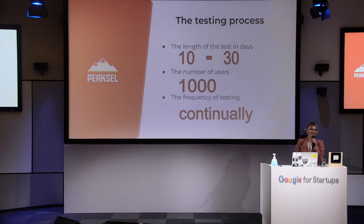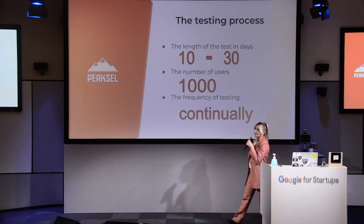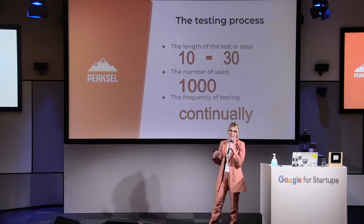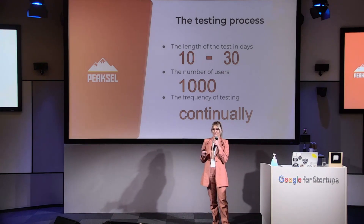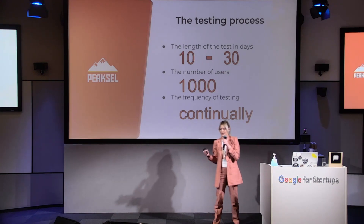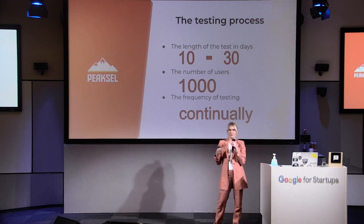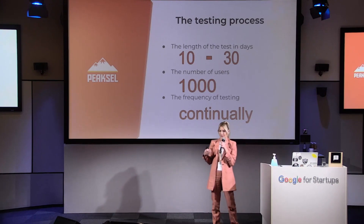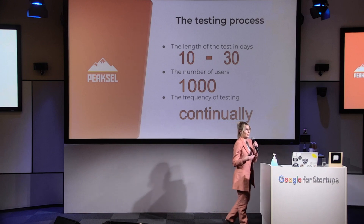First, when it comes to the testing process, these are a couple of things you should keep in mind: the length of the test, the number of users, and the frequency of testing. When it comes to length, our tests usually last between 10 and 30 days — long enough to collect enough users. When it comes to number of users, we tend to have about 1,000 users per test, but of course the more users, the more accurate the results.